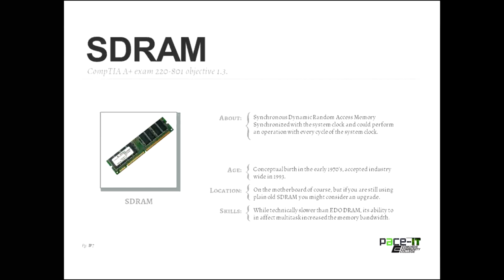SDRAM synchronized the RAM with the system clock and could perform an operation with every cycle of the clock. The clock has a tick up and a tick down — that is one cycle. So if you had a 33 megahertz clock cycle, your SDRAM ran at 33 megahertz. Conceptually, SDRAM was developed in the 1970s, but it didn't hit the industry until 1993.